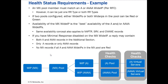An MX pool member must match an A or a Quad A wide IP — that is per the RFC for MX records. They need to match a fully qualified domain name, and in our case we're putting other wide IPs in the pool. The pool can have one resource record type or both: one pool can have A records and another can have Quad A records, and both those wide IPs can be referenced within the MX pool.